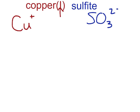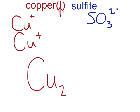As we can see, we don't have enough positive charge, so we need another copper ion. Now the total positive charge is equal to the total negative charge. So the formula for copper(I) sulfite is Cu₂SO₃. Notice that the 1 again refers to the oxidation number of the copper, not to the number of coppers in the formula.